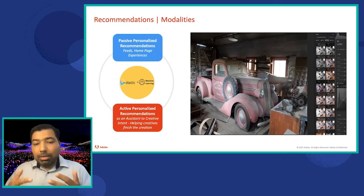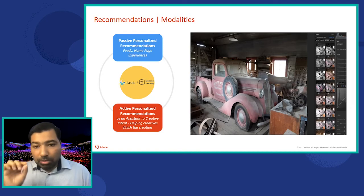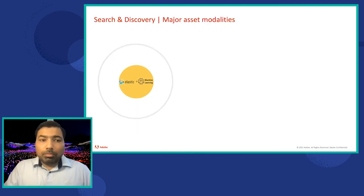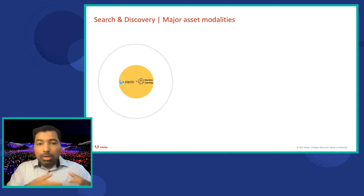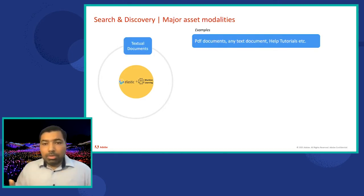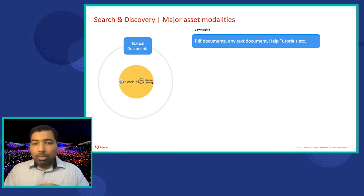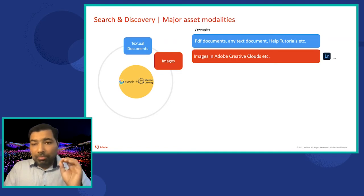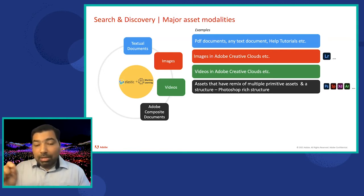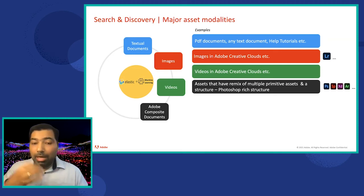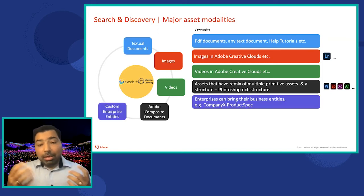Where, given an image, it can start giving recommendations of how to edit it in the best way possible with a single click. Another angle is asset modalities — assets are the artifacts produced using Adobe products. So textual content — PDFs, help tutorials — images, videos, composite documents made from primitives like video, images, and textual content. We power search for all of these.